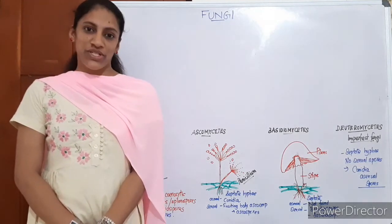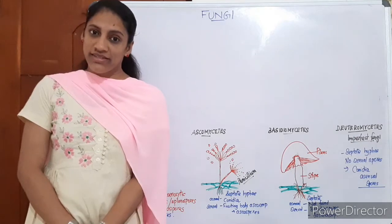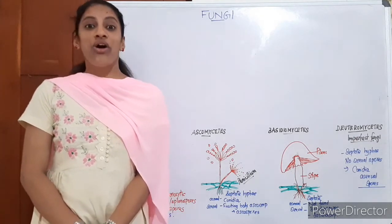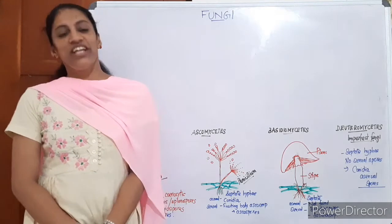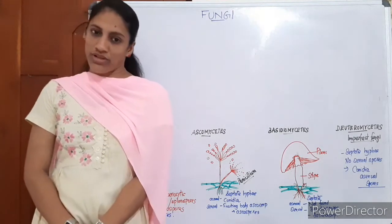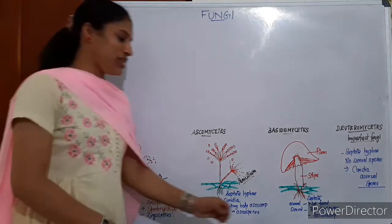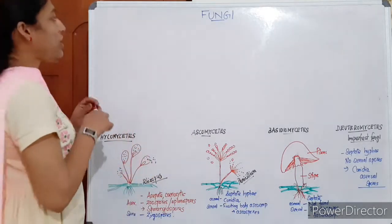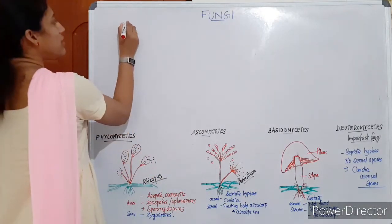The main features: unlike plants, fungi are not photosynthetic. They don't have a cellulosic cell wall. Because of these two main features, they were separated into a new kingdom by Robert Whittaker.